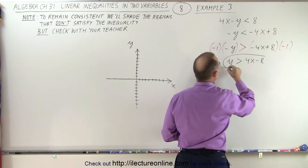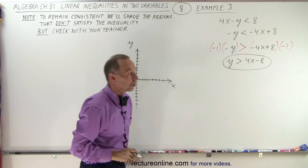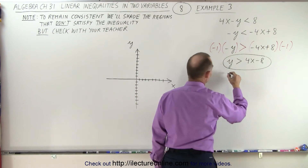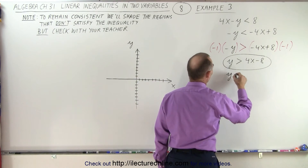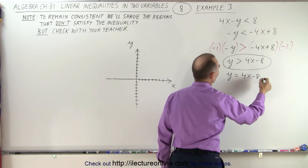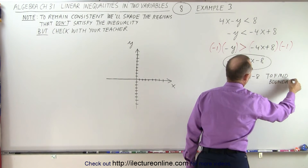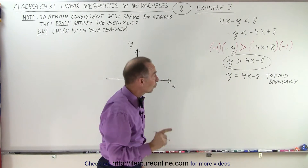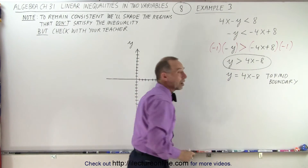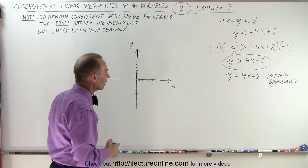This is the new format of the very same inequality we started with. Now we can easily turn that into an equation to graph: y equals 4x minus 8, to find the boundary. But we also have to be careful — notice we don't have an equal symbol, so the line we draw needs to be a dashed line, not a solid line.